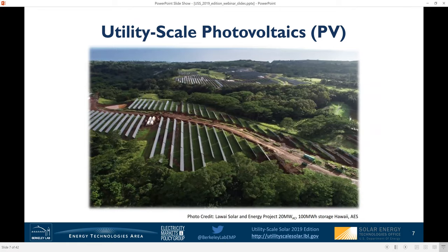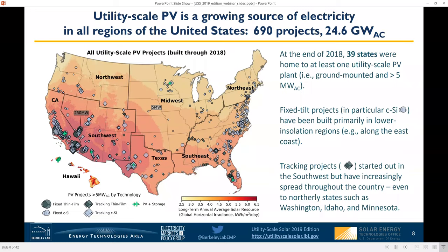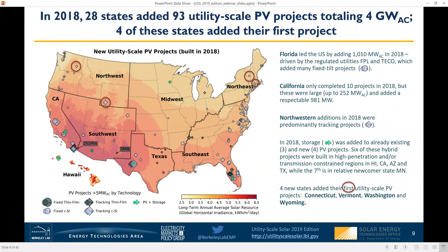Our sample of utility-scale PV projects is limited to ground-mounted projects larger than 5 megawatts of AC capacity. Here we see the locations of all the projects in our sample through the end of 2018. These 690 projects, totaling 24.6 gigawatts of AC capacity, are spread among 39 U.S. states, with a notable concentration in California and the southwest as well as along the eastern seaboard. There's a mix of tracking and fixed tilt projects shown here, but tracking has become much more prevalent and is almost the default mount type these days. Focusing on just the 93 projects in 28 states that came online in 2018, these total about 4 gigawatts of solar capacity.